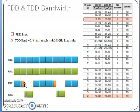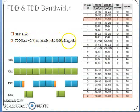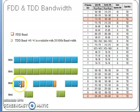FDD operates at 900, 1800, and 2100 MHz. Band 3 is used for FDD, and bands 40 and 41 are used for TDD with 20 MHz bandwidth. In FDD, one frequency is for downlink and another for uplink. In TDD, the same frequency is used for both uplink and downlink.